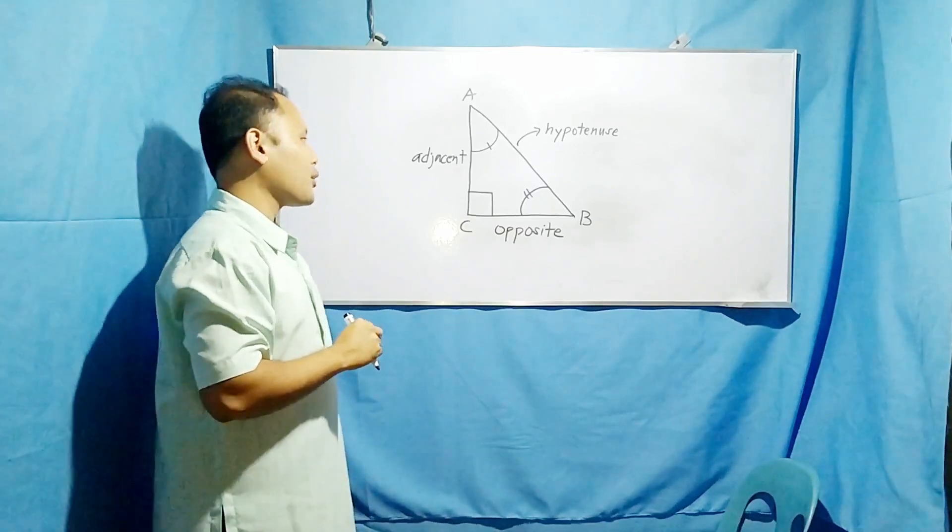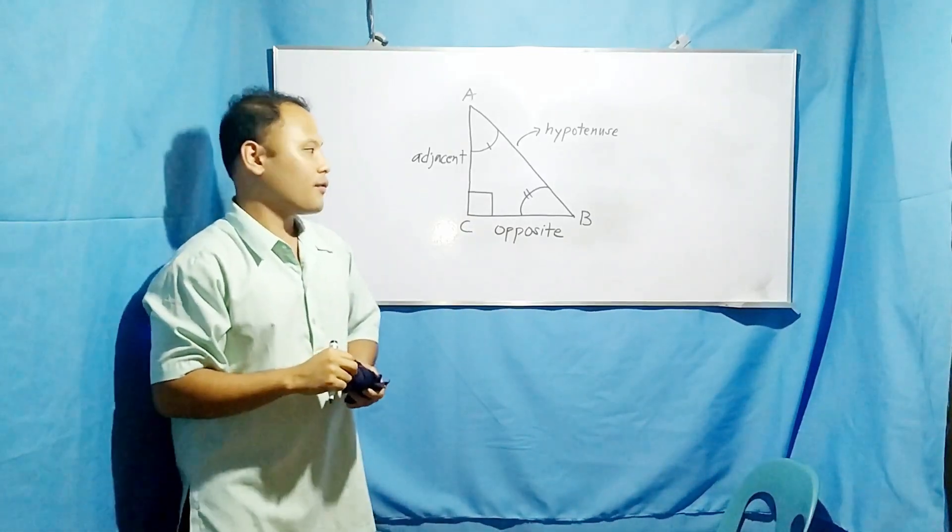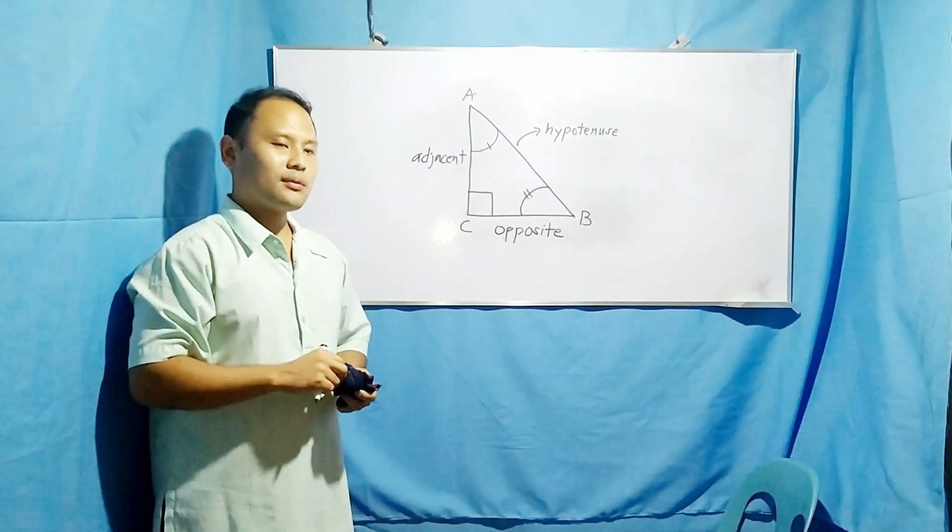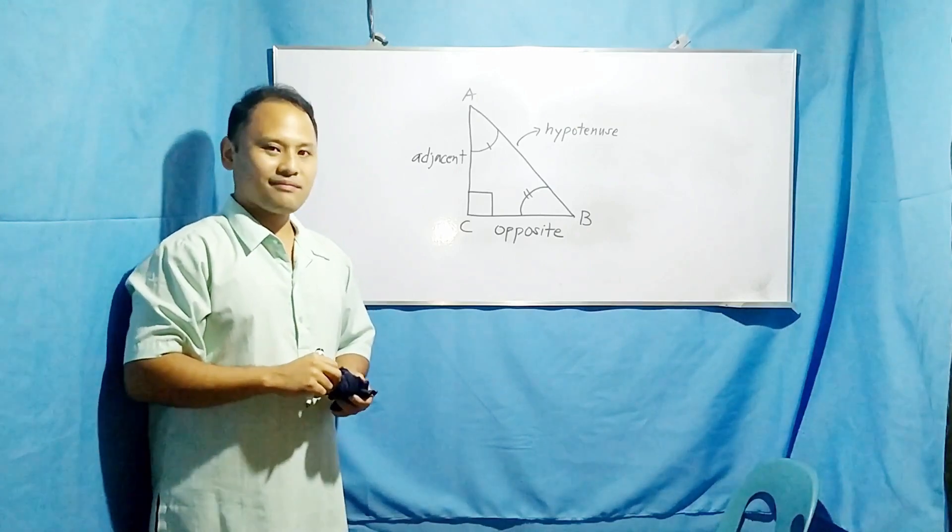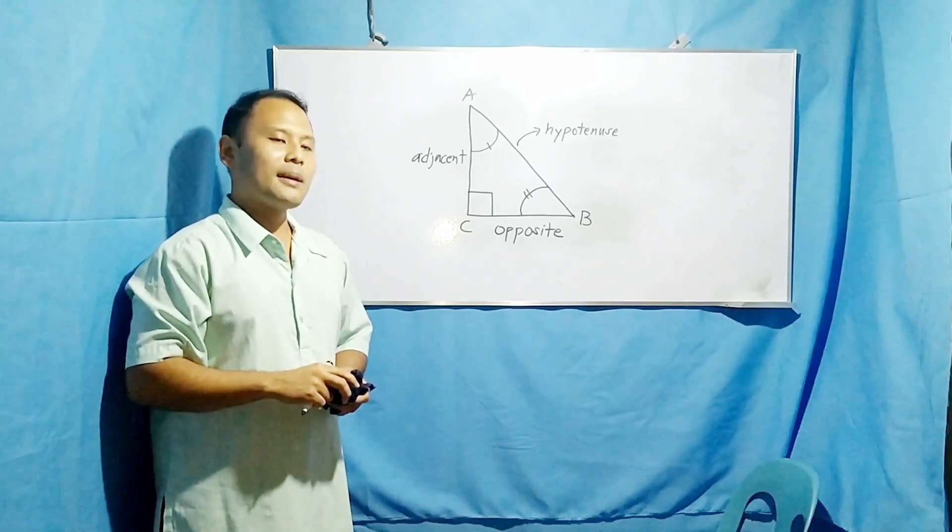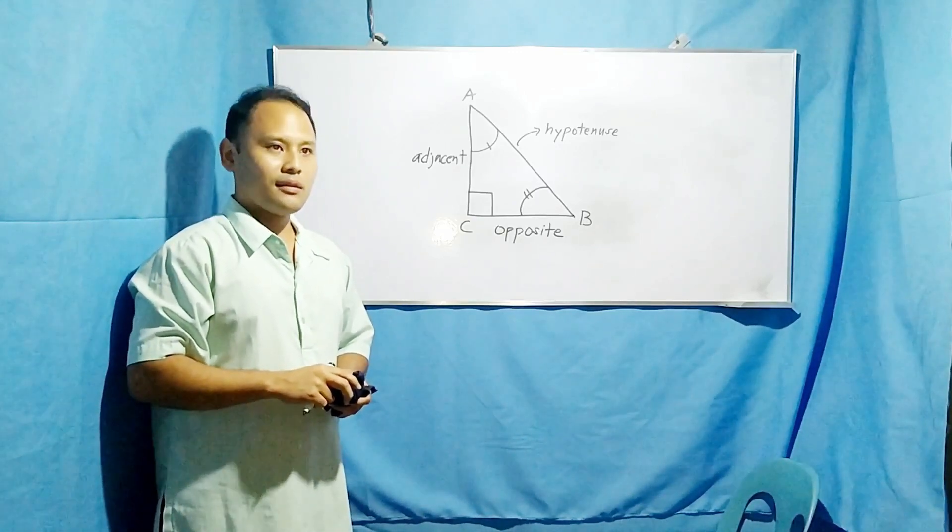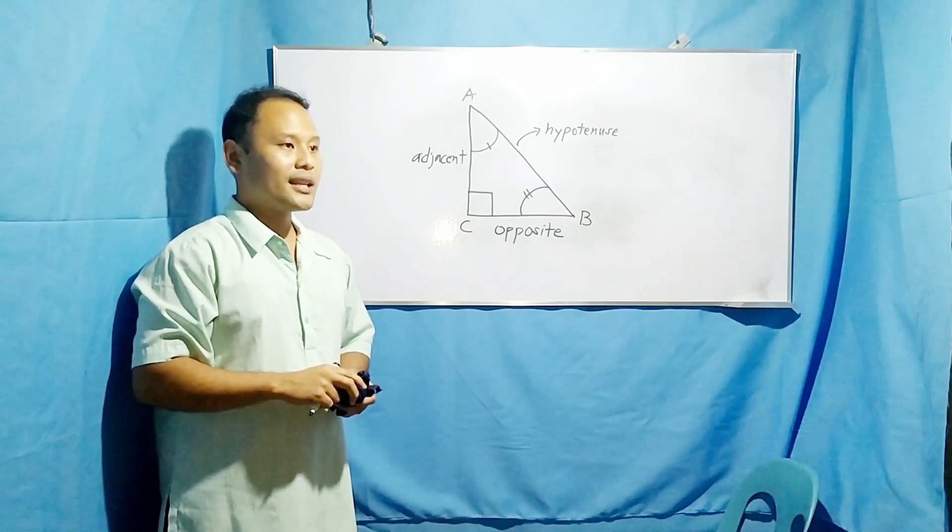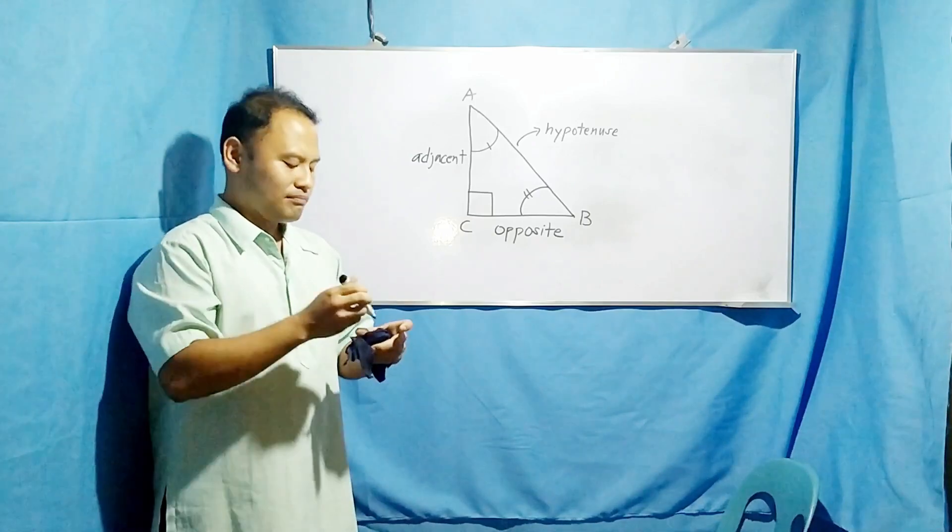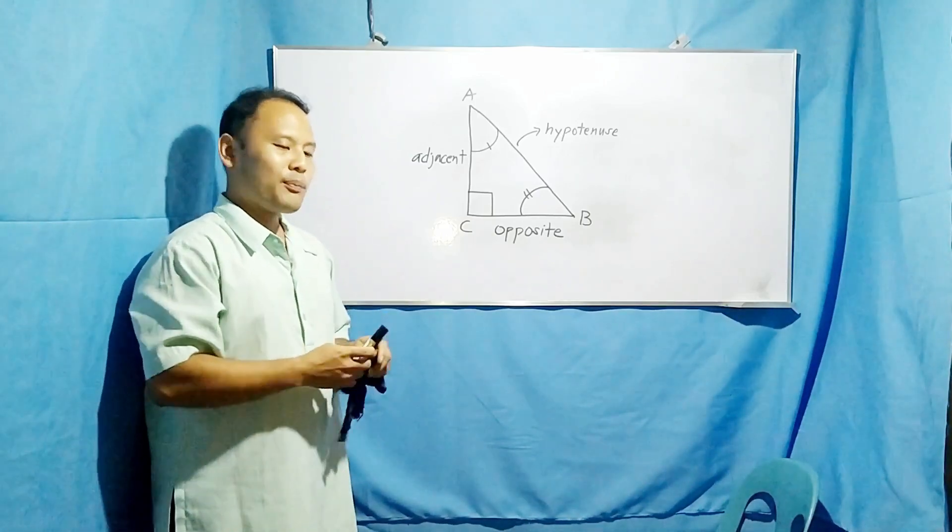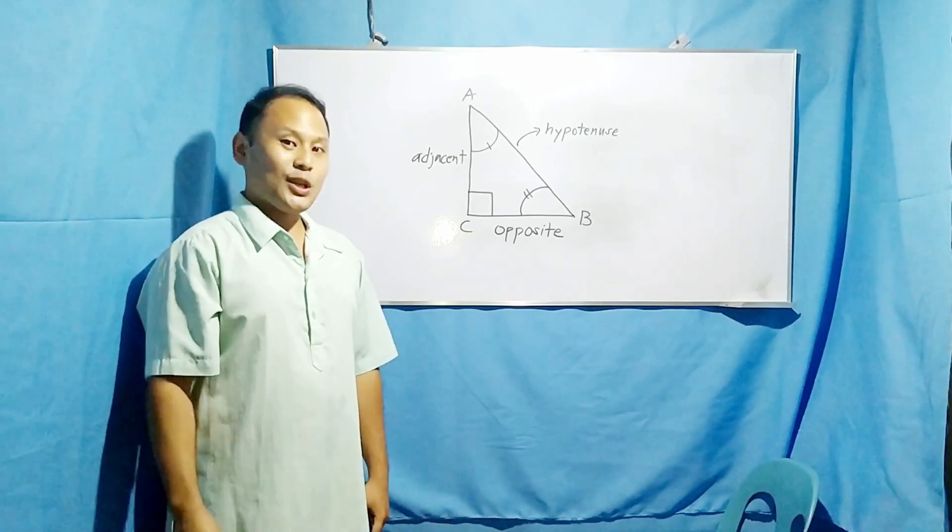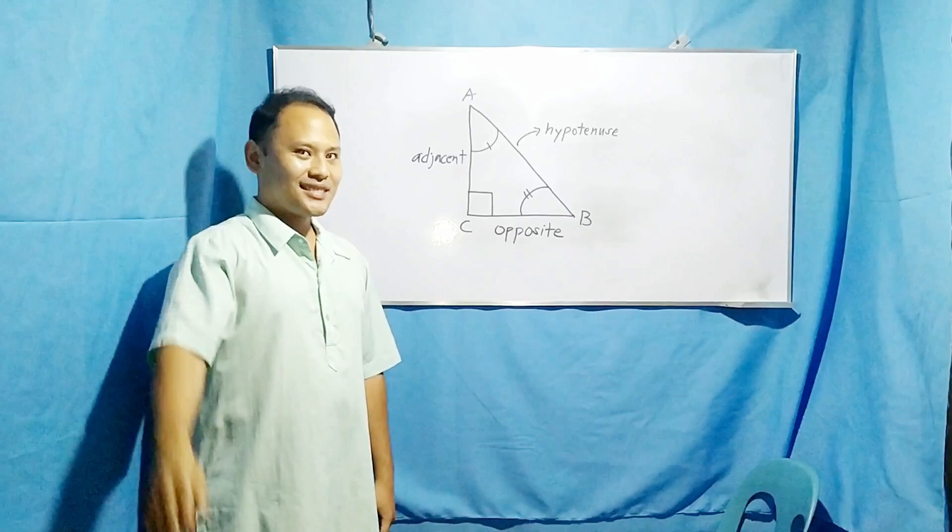Now that you have known the basic parts of the right triangle, you are now ready to see my next vlog which is entitled solving the missing side or the missing angle of a right triangle using SOHCAHTOA. So I hope you enjoy my discussion today. This is Rammer TV signing off and goodbye. Bye!